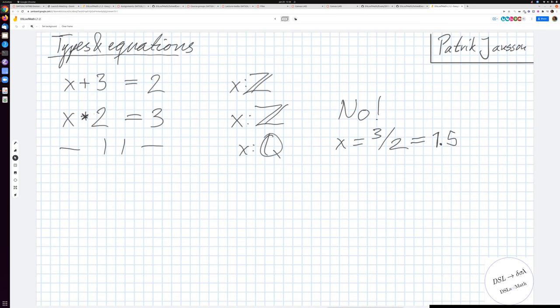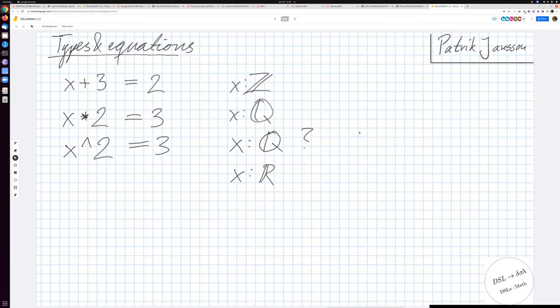So now we could ask, have we now, do we have enough numbers now? We've started from natural numbers, we've been to integers and now we're at the rationals. But we can still come up with equations which will be troublesome here. So I've stated yet another equation, x squared equals three. We had x times two equals three where we could solve it if we went to the rationals. But here, yet again, we actually have no. There exists no rational solving this equation, solving x squared equals three.